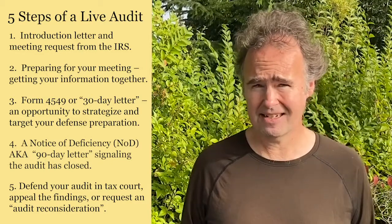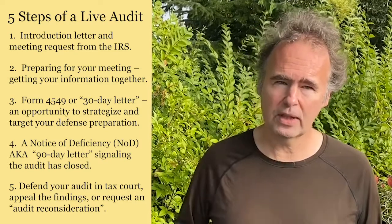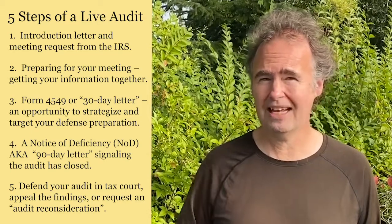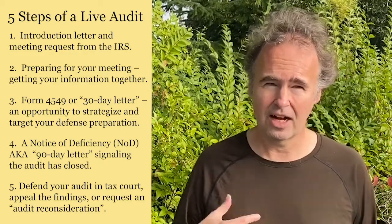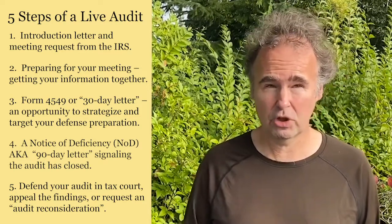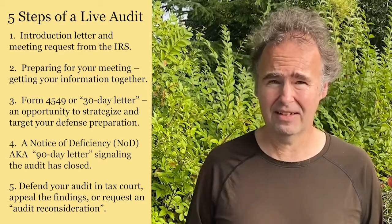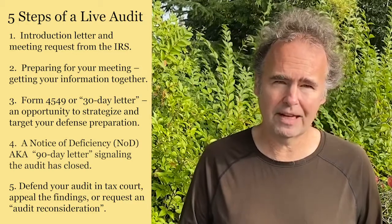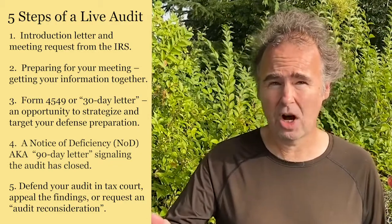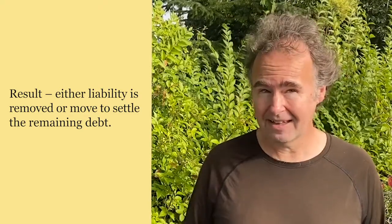Part five: you can have an accountant or an enrolled agent who has passed a tax court exam defend your audit in tax court. Somewhere between parts three and four, you can also appeal the audit within the audit division handling your case. If you decline to do a tax court case, you can do what is called an audit reconsideration — an alternative to tax court, maybe more cost effective, but it does take 12 to 18 months to process, where you truly dispute what your auditor concluded. Tax court is more expensive but quicker than an audit reconsideration. After all phases have closed, you either won't owe anything, or you may owe something and have to pay the liability and negotiate a settlement or a payment agreement.